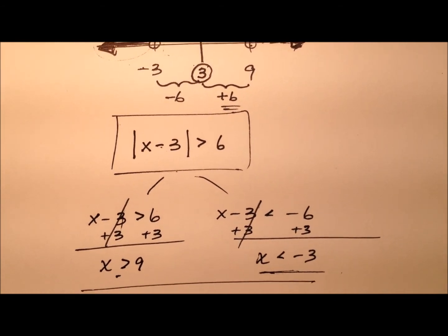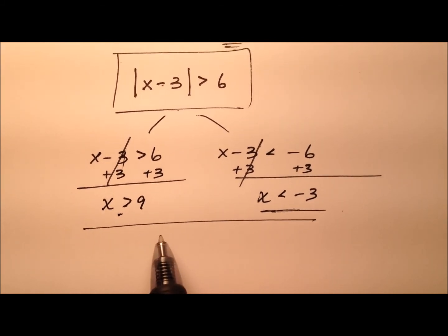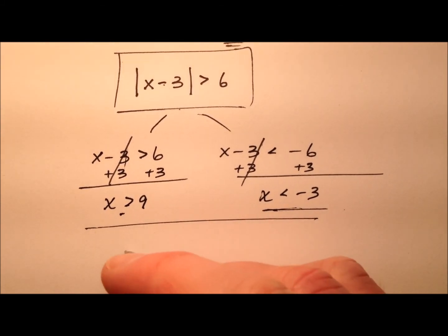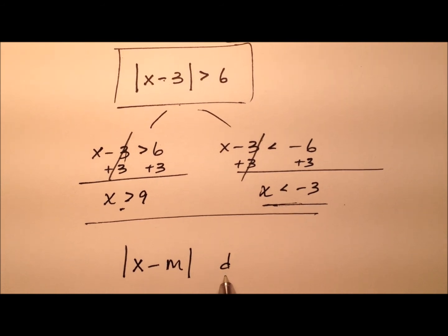But why is this correct? So let's talk about the way we could generalize a formula here. We could say the absolute value of x minus some midpoint, and then we have the distance, but is it going to be greater than, or is it going to be less than?